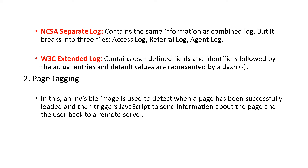Next is NCSA separate log, which in addition to the combined log has three files: access log, referral log, and agent log. Access records what has been done, referral records where it has gone, and agent records where it is coming from. The fourth type is W3C extended log, which contains user-defined fields and identifiers followed by actual entries and default values, represented by a dash.